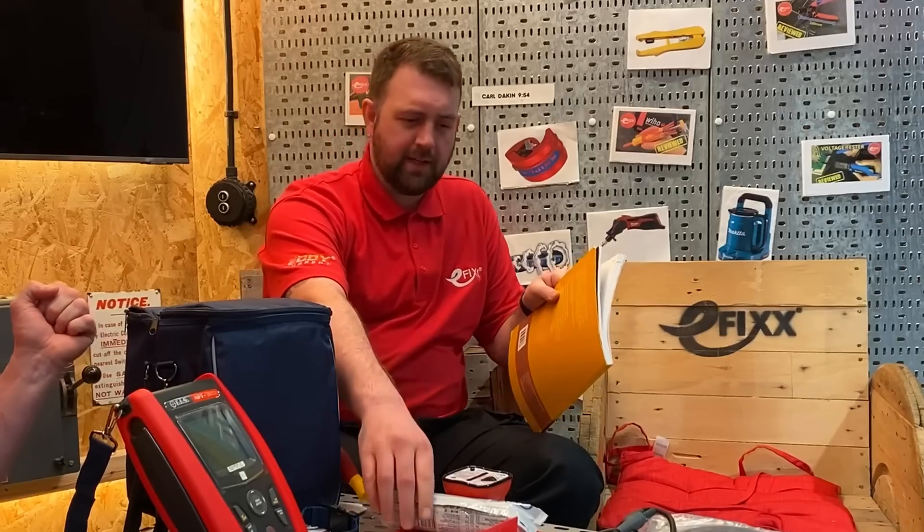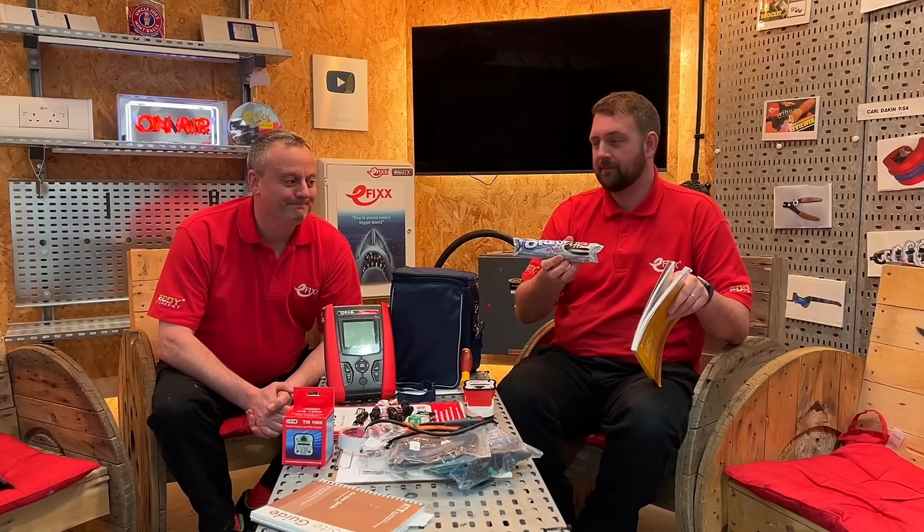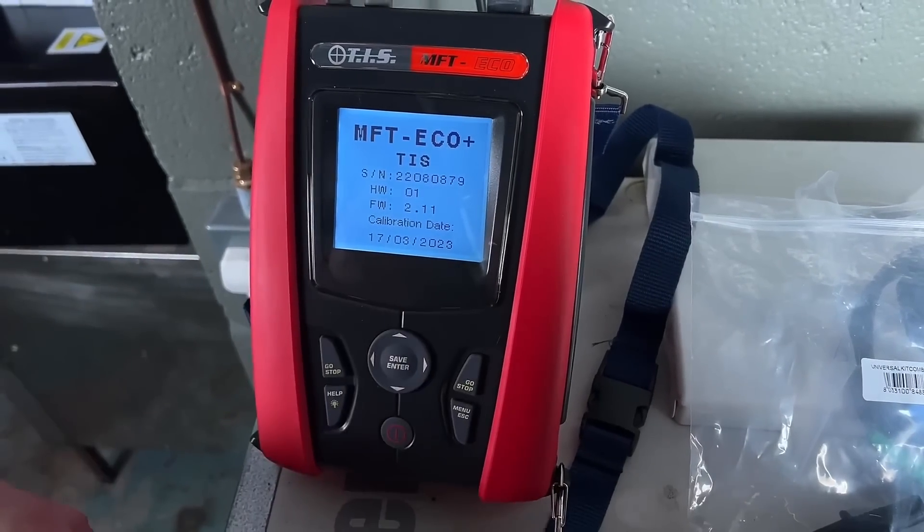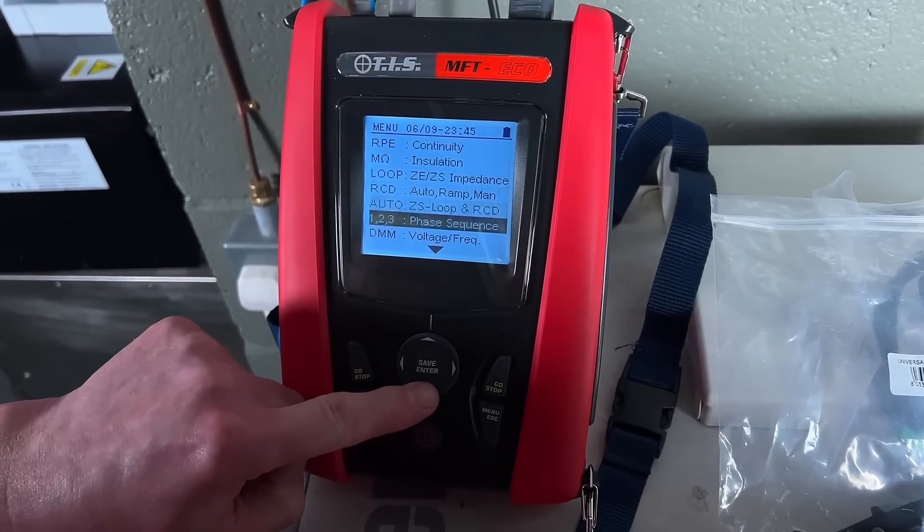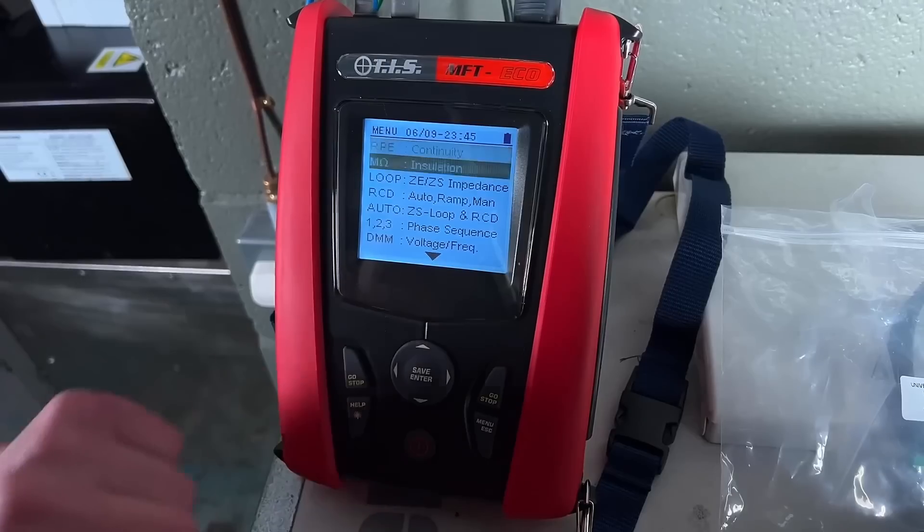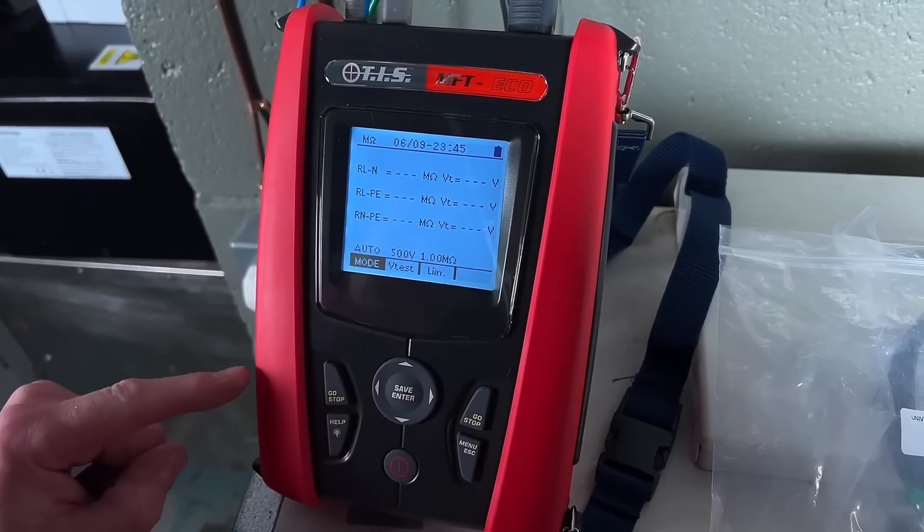Let's power up the TIS eco. Press and hold the button, we've powered it up, and then we can see the tests we can carry out with the instrument listed here, which we can scroll through to the appropriate one. Press again, we're back to our original first page. We're looking at doing that insulation resistance test. Press the button or enter, and there it is, there is our test page.